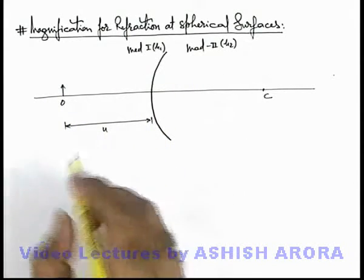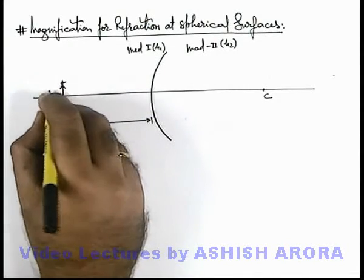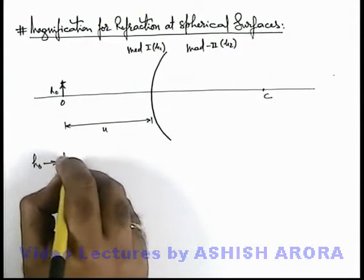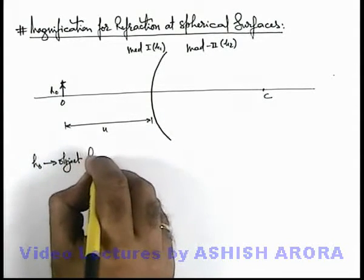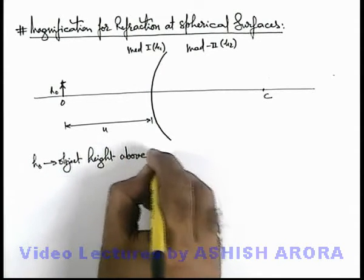Now in this situation to locate the image of this object which is placed over here, say h_o is the object height above optic axis.